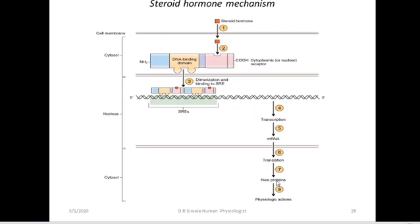The new protein can be anything, depending on the hormone. For example, aldosterone is a steroid hormone, and its function is to increase sodium reabsorption. So the new protein produced could be a sodium channel, such as the epithelial sodium channel. The new protein can be anything, depending on which hormone is bound.